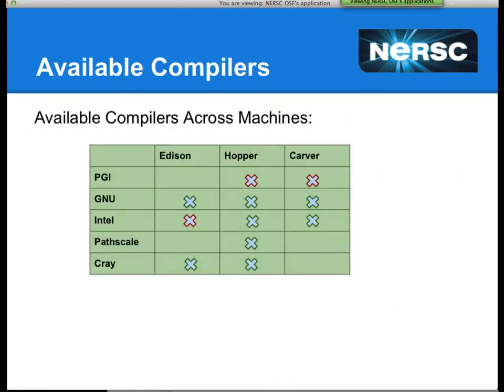What compilers are available on our machines? Hopper has five different compilers: PGI, GNU, Intel, Pathscale, and Cray. Carver and Edison have some subset of those. Edison notably has Intel as the default programming environment — if you do a module list on Edison, you'll see the PRG_ENV_Intel module loaded by default. On Carver and Hopper, PGI is the default compiler.